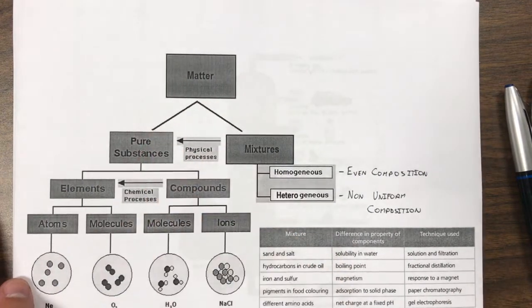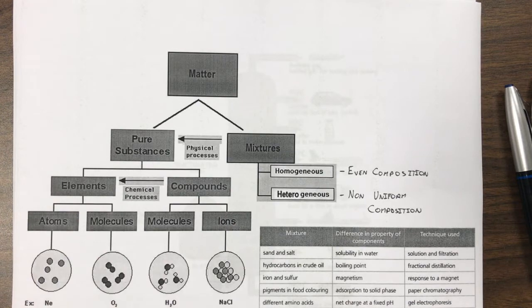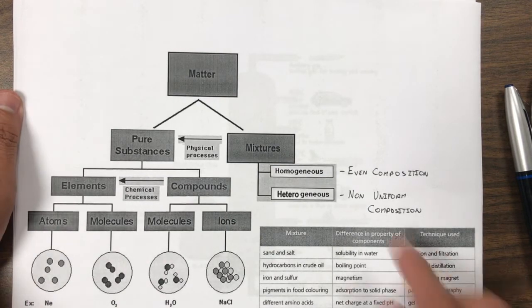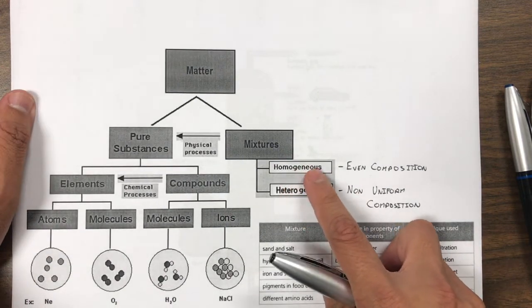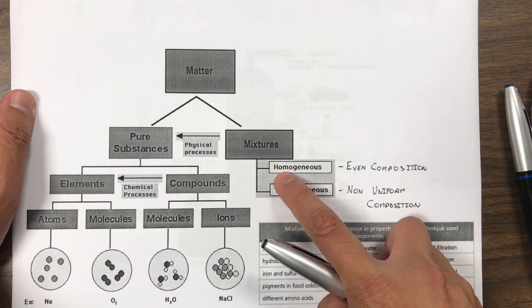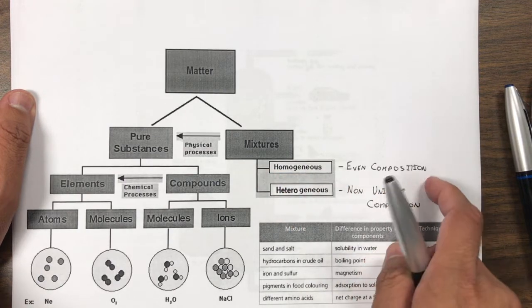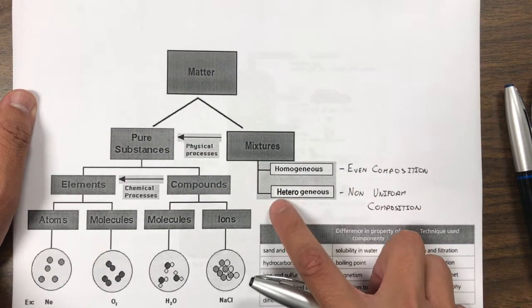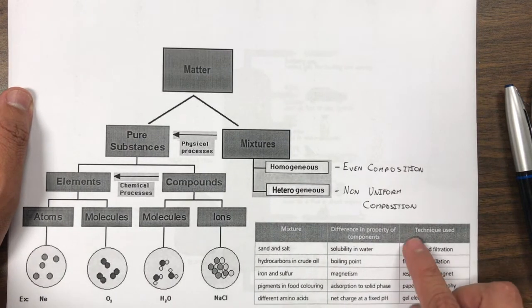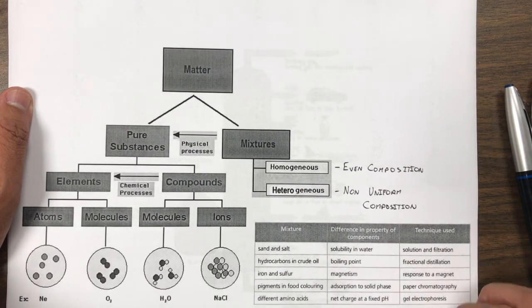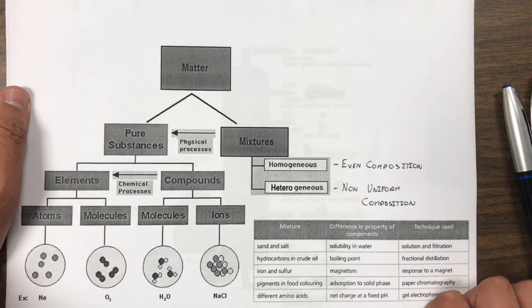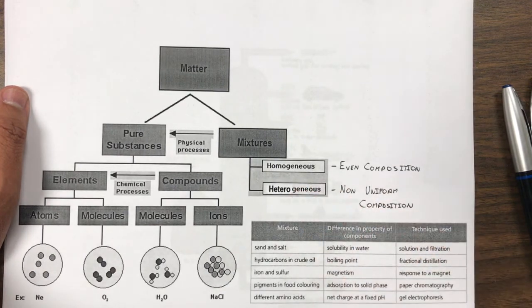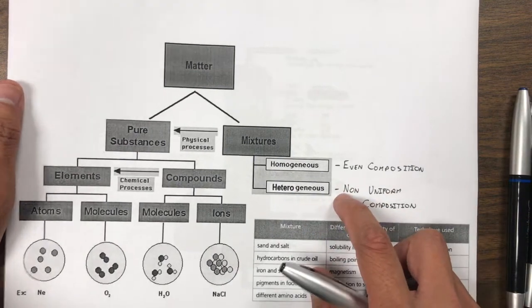Matter, we can categorize it into two categories, pure substances and mixtures. We'll notice here that there are two types of mixtures. We have homo or same evenly mixed composition, homogeneous mixture, and we have heterogeneous mixtures, which have a non-uniform composition, kind of like boba milk tea. It's not distributed evenly no matter how well you mix your boba.